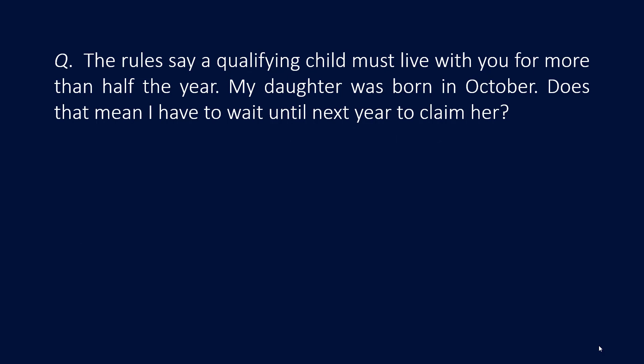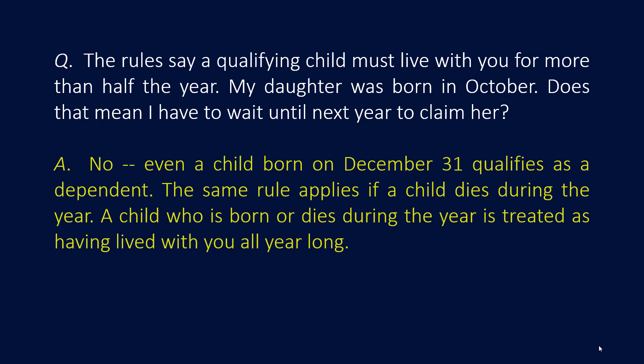The rules say a qualifying child must live with you for more than half the year. If your daughter was born in October, does that mean you have to wait until next year to claim her? No. Even a child born on December 31st qualifies as a dependent. The same rule applies if a child dies during the year — a child who is born or dies during the year is treated as having lived with you, the taxpayer, all year long.